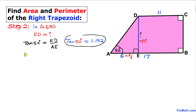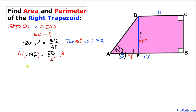So: 1.192 equals ED divided by AE, where AE is 6. Multiplying both sides by 6 to isolate ED, we find that ED is approximately equal to 7.152 units.